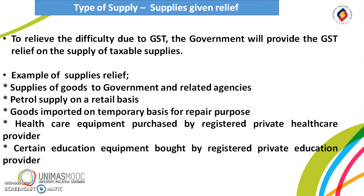Last but not least is the supplies given GST relief. To relieve the difficulty due to GST on certain categories of business, the government will provide GST relief on the supply of taxable supplies which would otherwise be subject to GST. Some of the supplies given relief include supplies of goods by business to government and related agencies, and supplies of petrol on a retail basis.